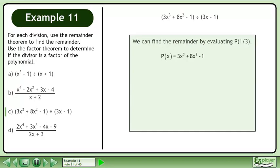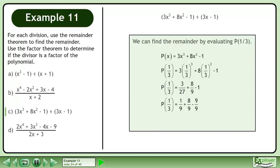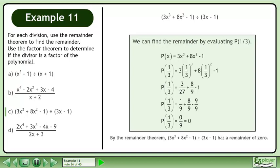We can find the remainder by evaluating p at 1 over 3. We write p of x equals 3x cubed plus 8x squared minus 1, and use 1 over 3 as the function input. Evaluate the powers and simplify: 3 over 27 reduces to 1 over 9, and minus 1 can be written as minus 9 over 9. All three terms now have the same denominator, and we get a result of 0. By the remainder theorem, 3x cubed plus 8x squared minus 1 divided by 3x minus 1 has a remainder of 0.